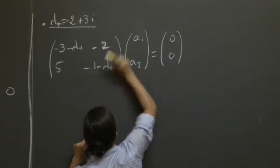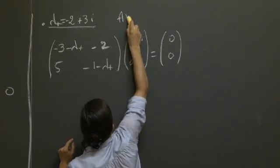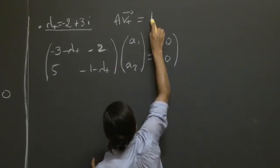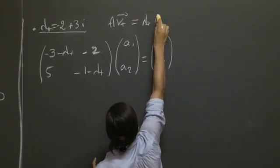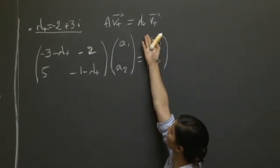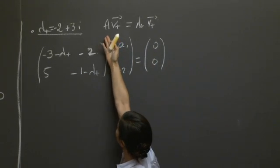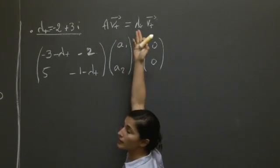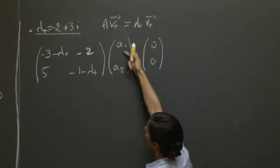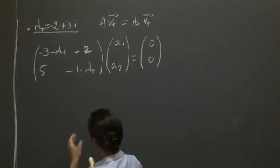So where does this system come from? It comes from the fact that we're looking for eigenvector v plus, that is defined as A v plus equals lambda plus v plus. And you can then bring everything on the left-hand side: A minus lambda I applied to v plus gives us the zero vector. So that's what we have here. The unknowns are a1, a2, and we're going to try to solve for this.